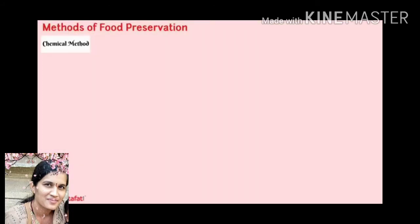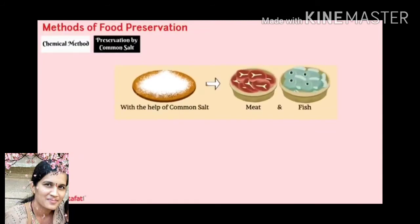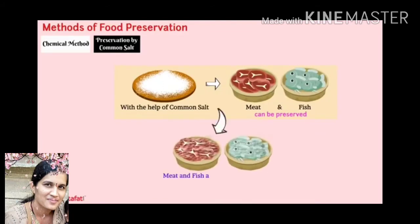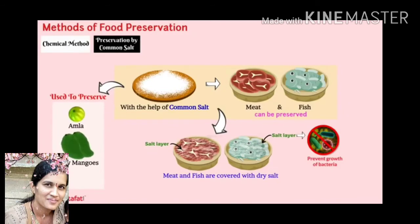Preservation by common salt: with the help of common salt we can preserve meat and fish, because meat and fish are covered with dry salt, which forms a salt layer that prevents the growth of bacteria. With the help of common salt we can also preserve amla, mangoes and tamarind for long-term use.